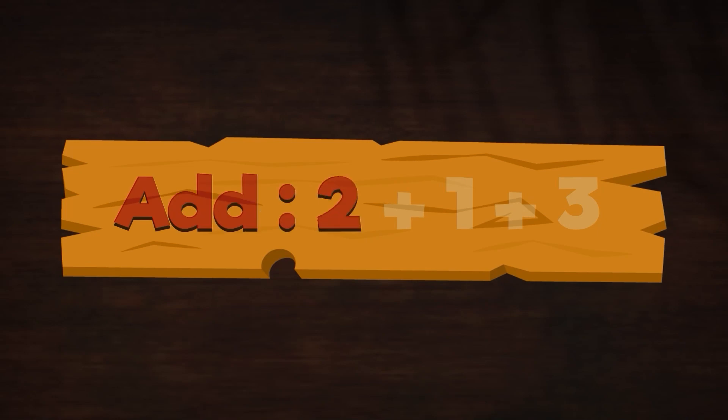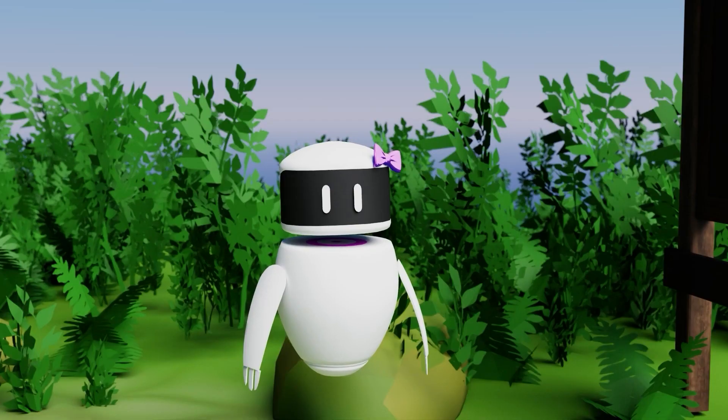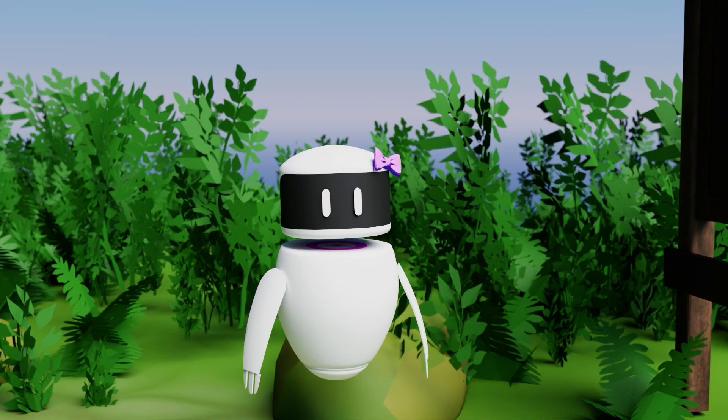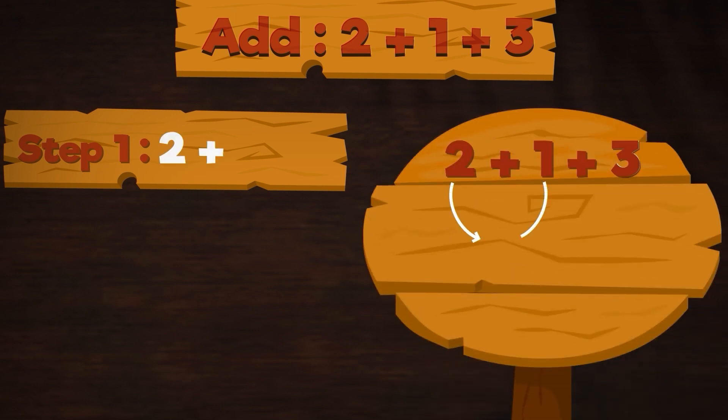Add 2 + 1 + 3. How do you add three numbers? Let me explain that. Step one, take the first two numbers, 2 and 1. Add them.